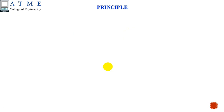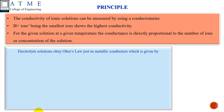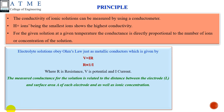Let us see the principle first. The conductivity of ionic solutions can be measured using a conductometer. H plus ions, being the smallest ions, show maximum conductivity. For a given solution at a particular temperature, the conductance is directly proportional to the number of ions present. Electrolyte solutions obey Ohm's law just like metallic conductors, given by V = IR, where R and I are inversely proportional to each other — R is resistance, V is potential, and I is current.